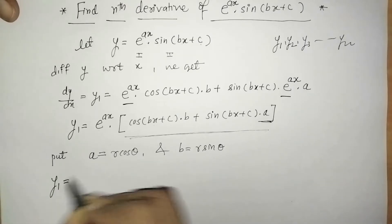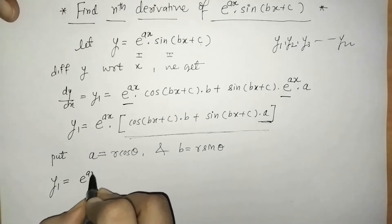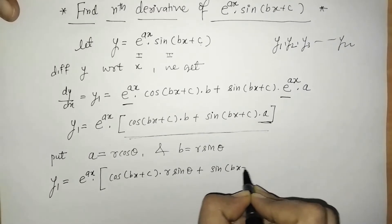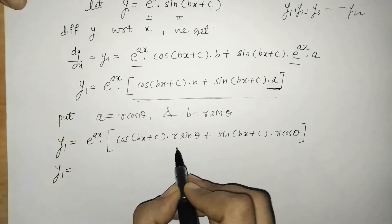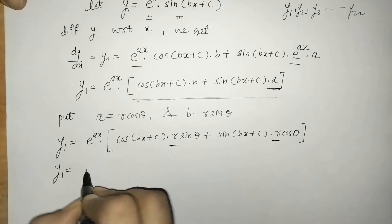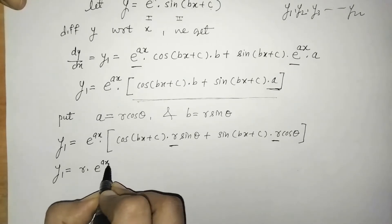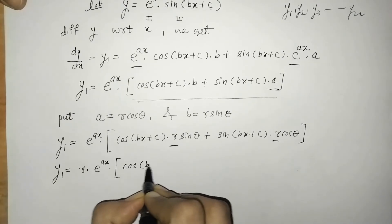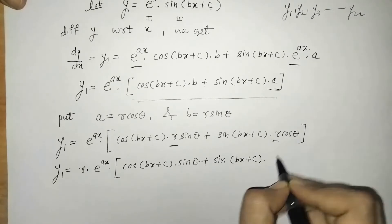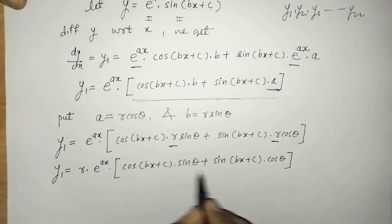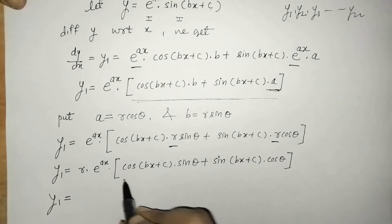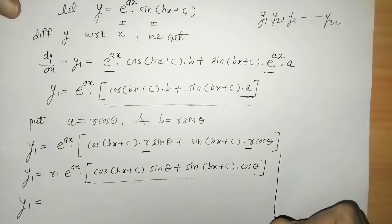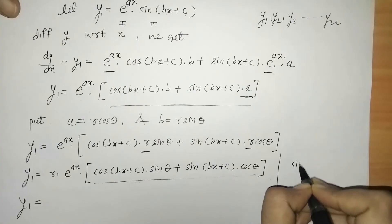On applying this substitution we get r as a common factor, so we take r outside. We have r into e raised to ax with the remaining term as it is. We can then check this expansion and compare it with the standard sin(A+B) expansion.